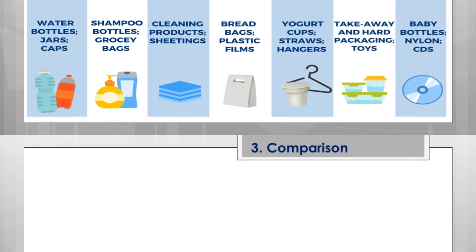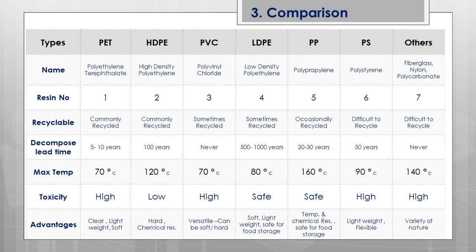Next we see a detailed comparison of these seven plastics — a simple summary giving a clear view. The abbreviations PET, HDPE, PVC, LDPE, PP, PS, and Others have already been discussed, along with resin numbers one through seven. Regarding recyclability: numbers one and two are commonly and easily recycled, PVC and LDPE are sometimes recycled, PP is occasionally recycled, and numbers six and seven are difficult to recycle.